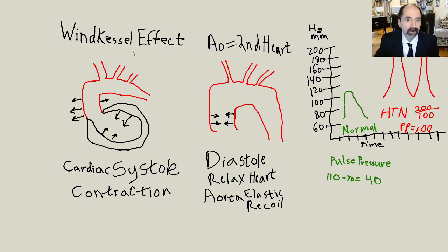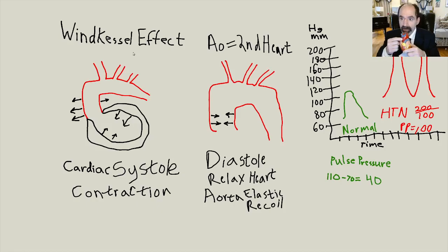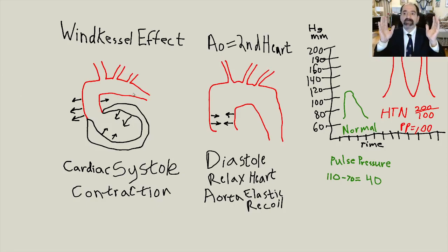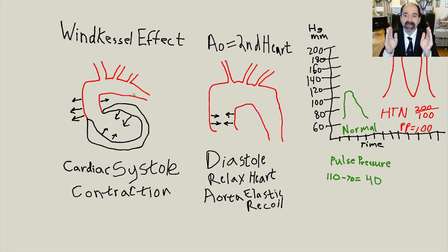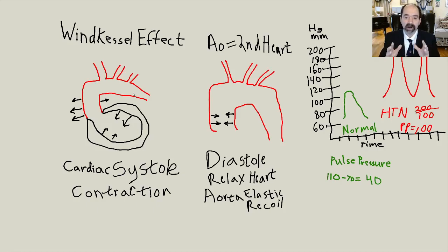The Windkessel effect involves the ascending thoracic aorta. I've got a model of the heart right here. When the heart pumps blood — that's called systole, left ventricular contraction — the blood goes up into the ascending aorta. When the left ventricle contracts, the ascending thoracic aorta expands outward because of the pressure of the contraction. During diastole, the heart relaxes and the ascending thoracic aorta recoils inward — that's called elastic recoil — and that maintains good blood flow during diastolic cardiac relaxation.